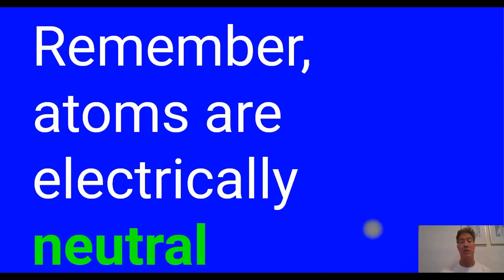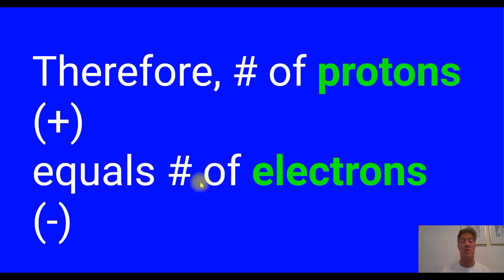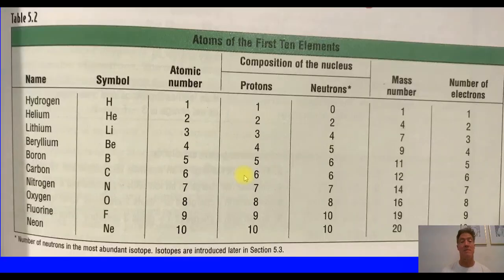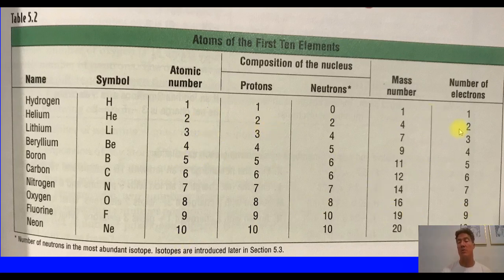Atoms are electrically neutral. Therefore, the number of protons — the positively charged particles that give the atom its identity — is equal to the number of electrons that balance out that positive charge. The atomic number not only gives you the number of protons, it's a two-for-one special: you also get the number of electrons because electrons equal protons. Here are the atoms of the first ten elements — atomic number one has one proton and one electron; atomic number two has two protons and two electrons, and so on. Atomic number equals proton number equals electron number.